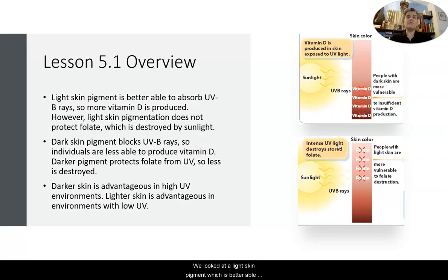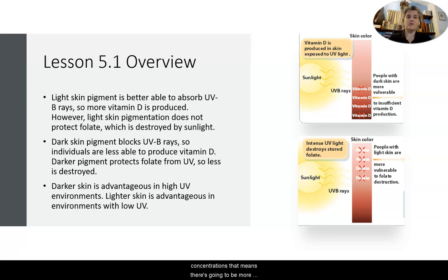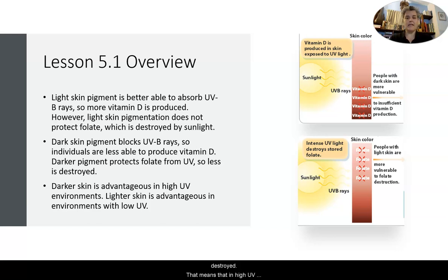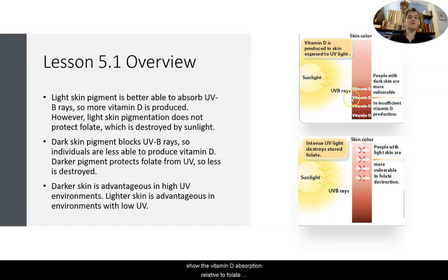Light skin pigmentation is better able to absorb UVB rays, meaning more vitamin D is produced. However, if you have high UV concentrations, more folate is destroyed. Dark skin pigmentation blocks UVB rays, so a person with dark skin is less able to produce vitamin D, but it protects folate much better from UV rays. In high UV environments, darker skin is more advantageous, whereas in low UV environments, lighter skin is more advantageous. You'll recognize the images here to the right showing vitamin D absorption relative to folate destruction in varying amounts of UV rays.